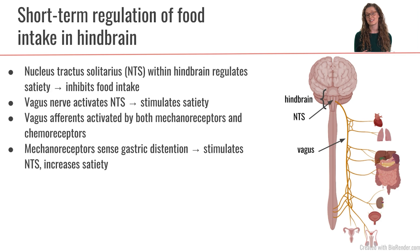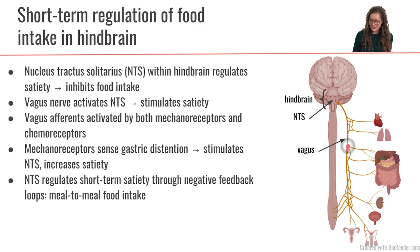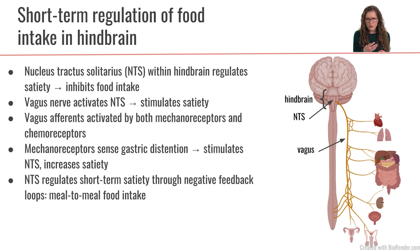When does the GI tract get stretched? When we're digesting a meal. The distension that happens in the stomach and intestines when we are digesting a meal will cause the intestines to stretch, which stimulates the mechanoreceptors on the vagus nerve. When those mechanoreceptors are stimulated, the vagus nerve sends signals up to the nucleus tractus solitarius to induce satiety. This makes sense — when we have stretch within the GI tract, that means we're digesting food and we don't need to be eating more, so we can initiate satiety.